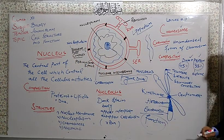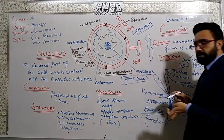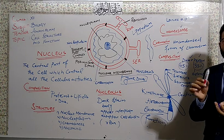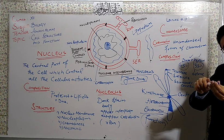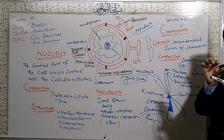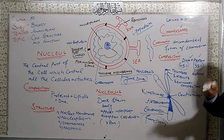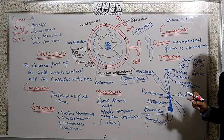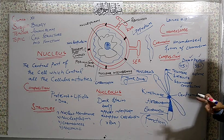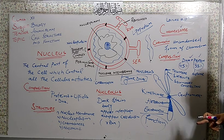My dear students, telomeres have a great role in aging. How? Just like you have a pencil and you sharpen your pencil and the pencil length decreases with passage of time. Just like that, with too much division, the length of the telomere is reduced. When the telomere is reduced too much, then the cell is not able to divide furthermore. That is why we get aged with the passage of time. Telomere has a great role in aging.